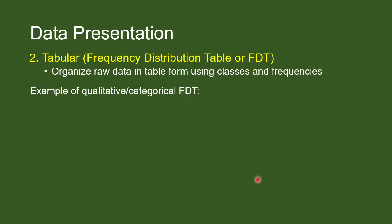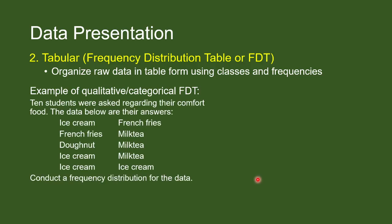We have different FDT depending upon the nature of the data. When we have a categorical or nominal or qualitative data, something like this.